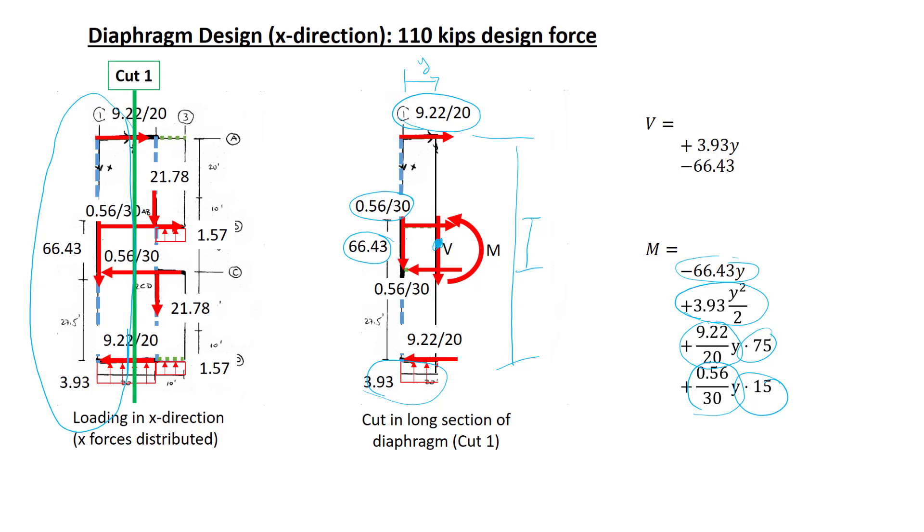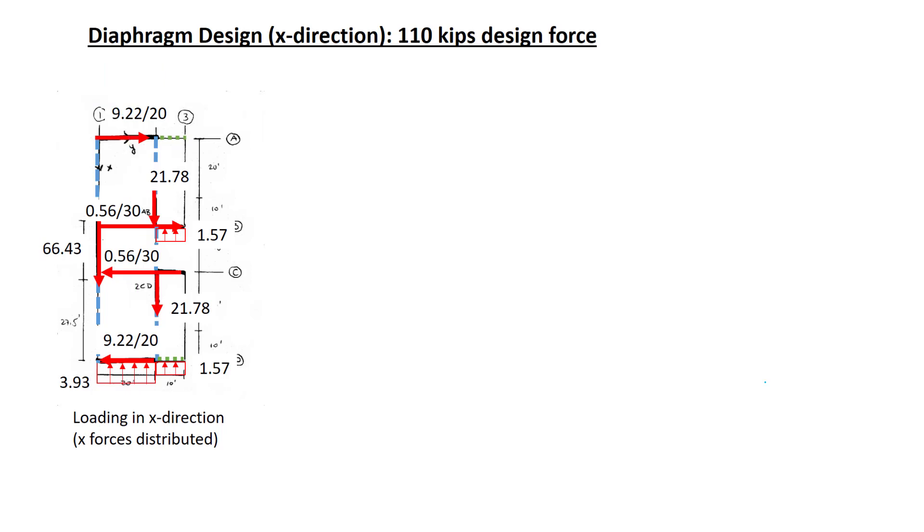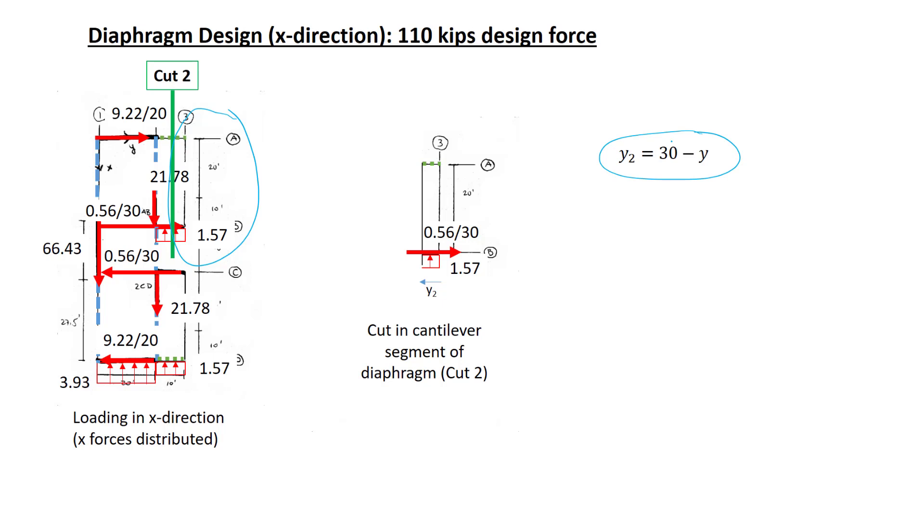Now, we need to do another cut. So let's draw our diaphragm with all the forces. And we'll take a cut through the cantilever section. We'll isolate everything now to the right of the cut, including the piece of diaphragm, including the forces that are there. And we'll use a coordinate y2 measuring from the right, where y2 is simply 30 feet minus y. It'll make our math easier.